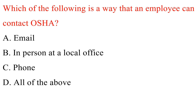Question. Which of the following is a way that an employee can contact OSHA? A. Email. B. In person at a local office. C. Phone. D. All of the above. Answer: D. All of the above.